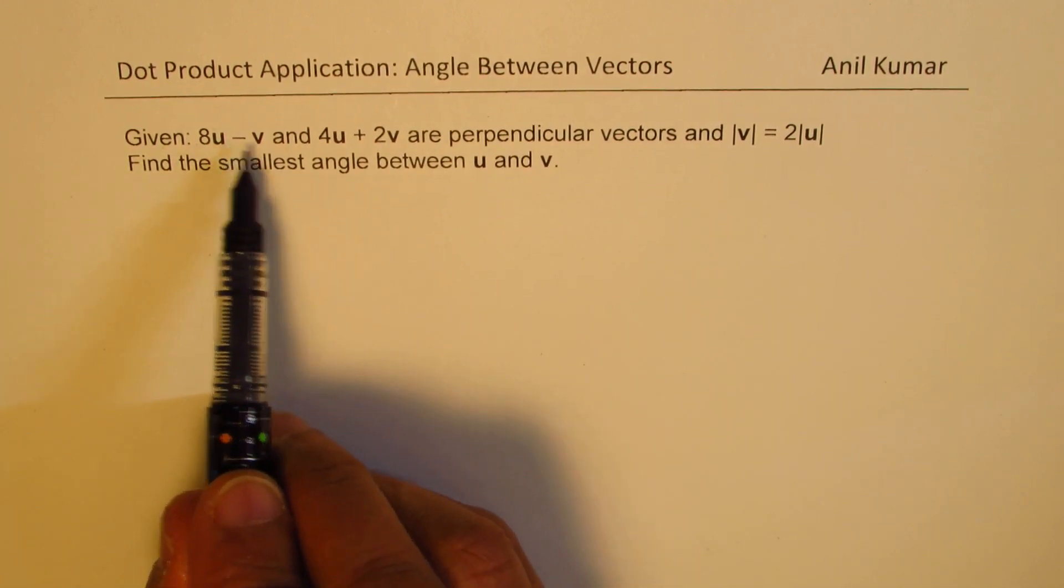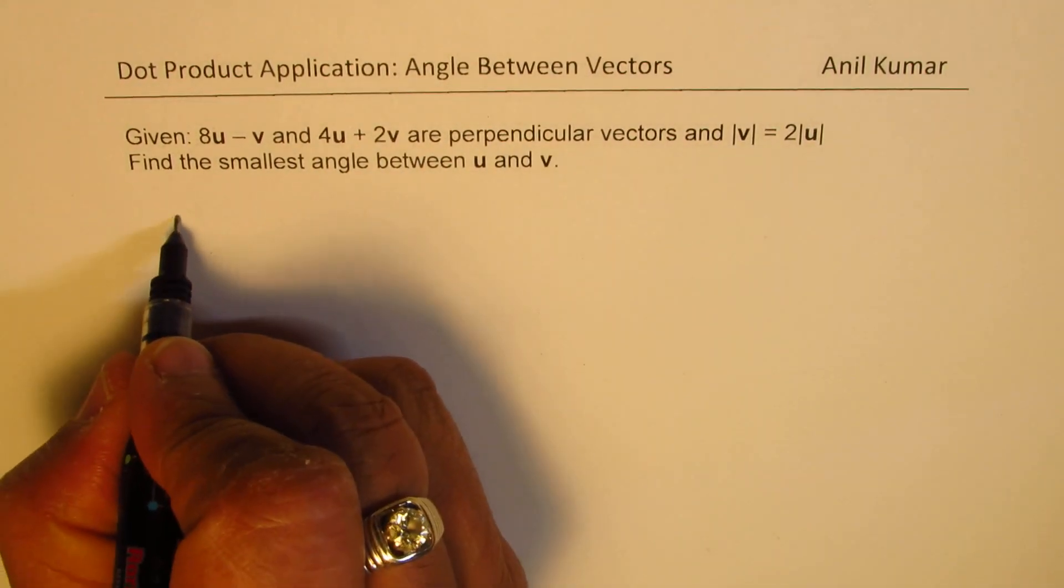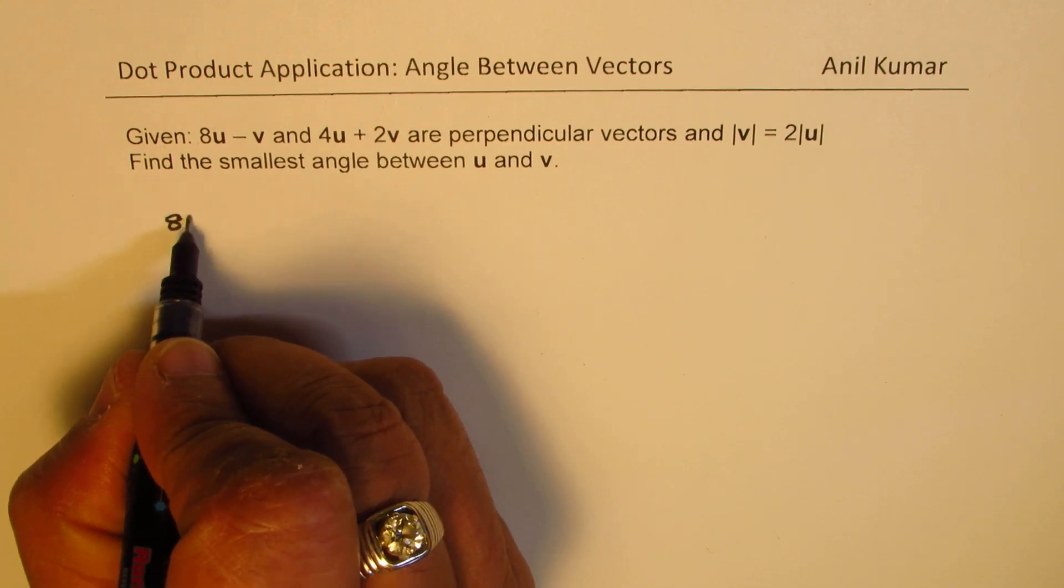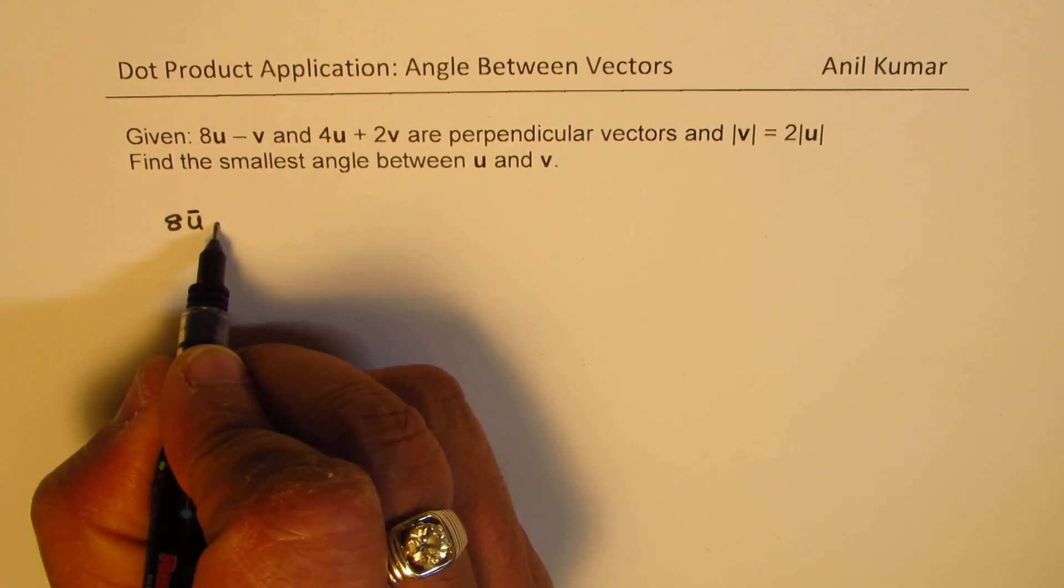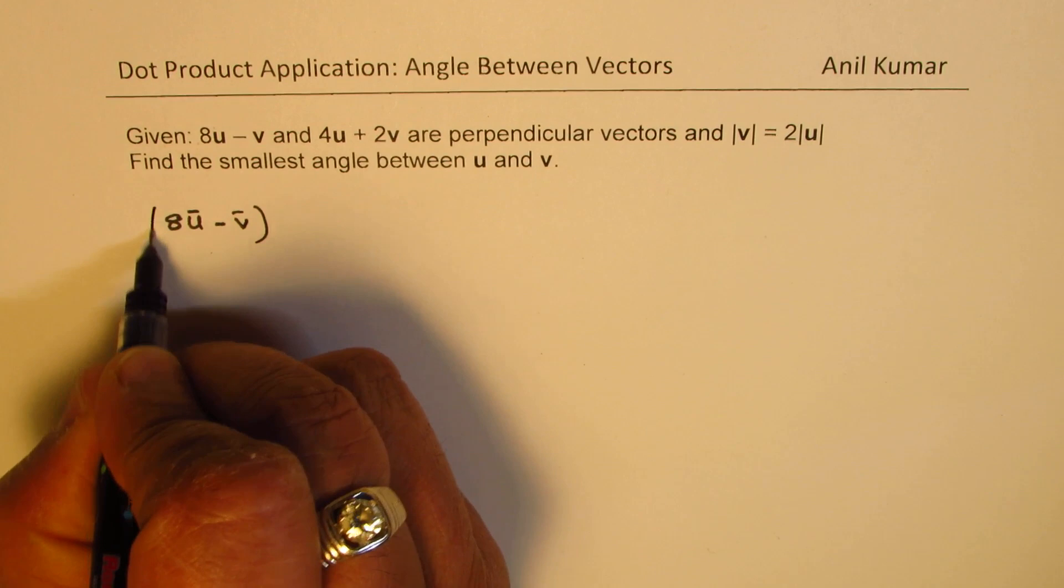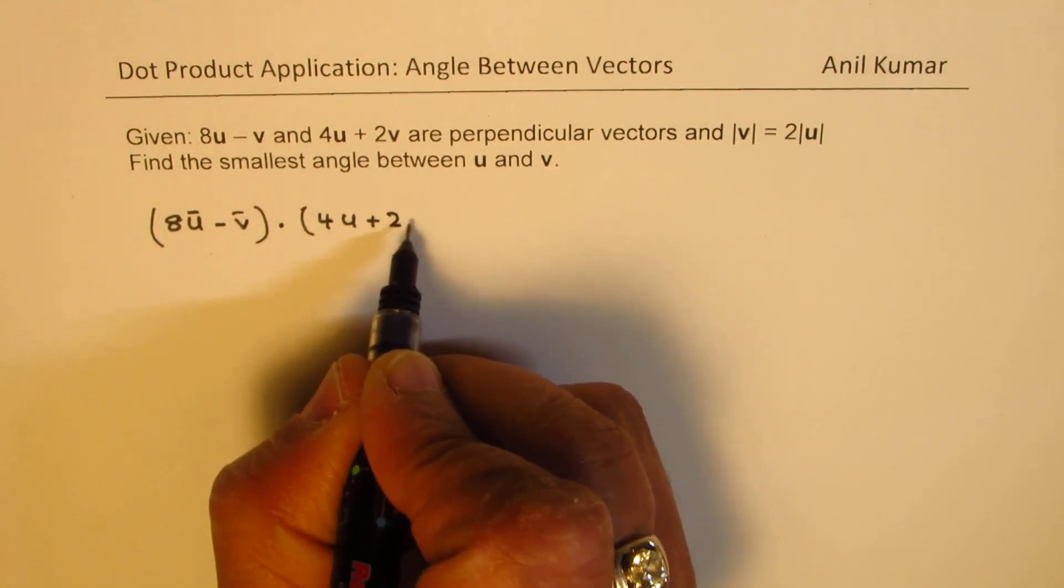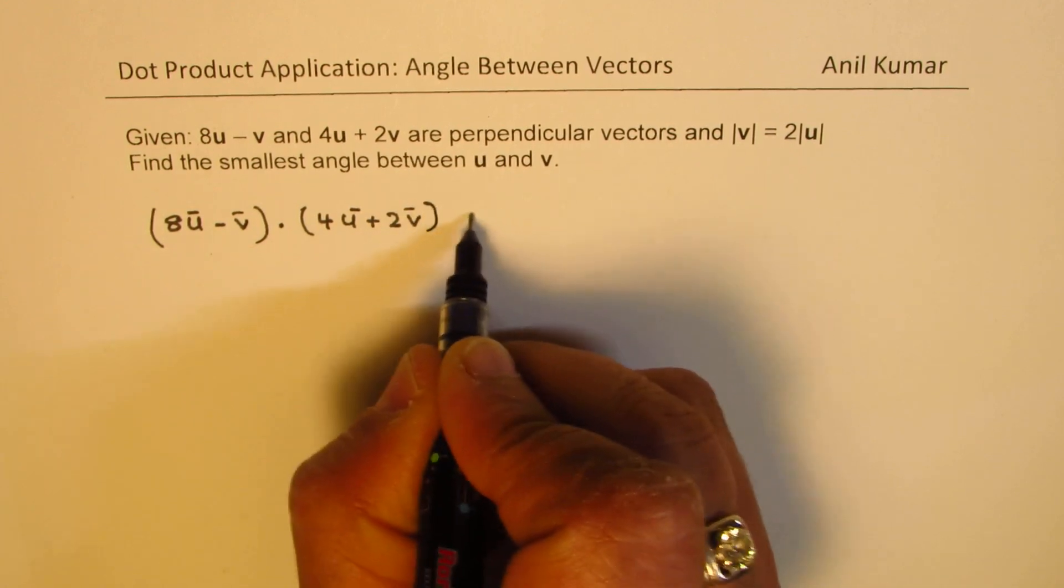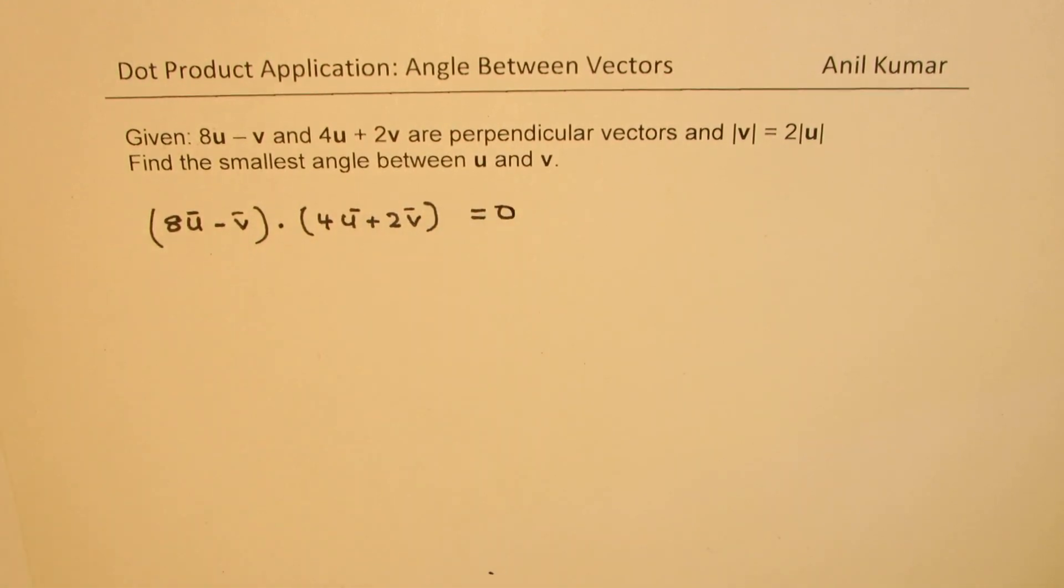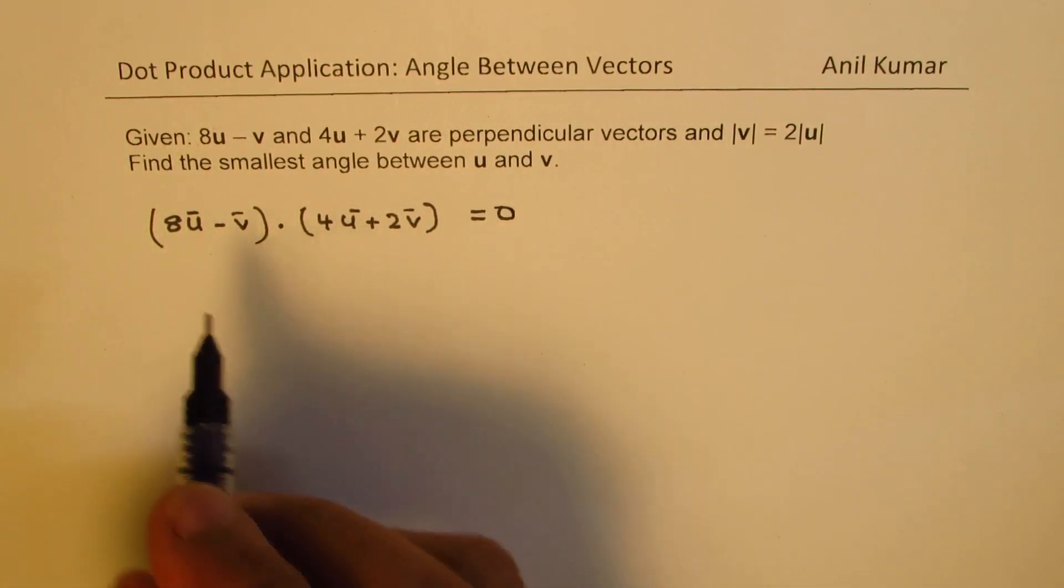Now to solve, we know these two vectors are perpendicular, that means their dot product should be zero. So 8u minus v dot 4u plus 2v should equal zero. Let's perform this dot product.